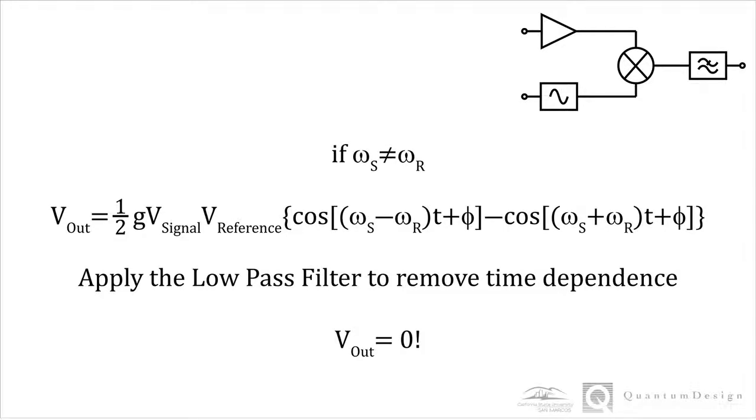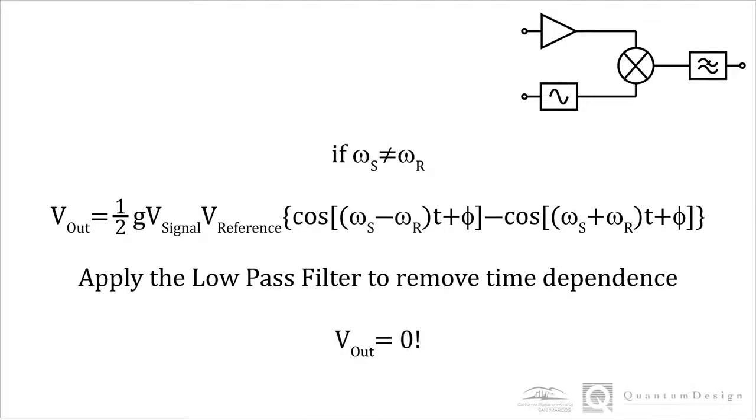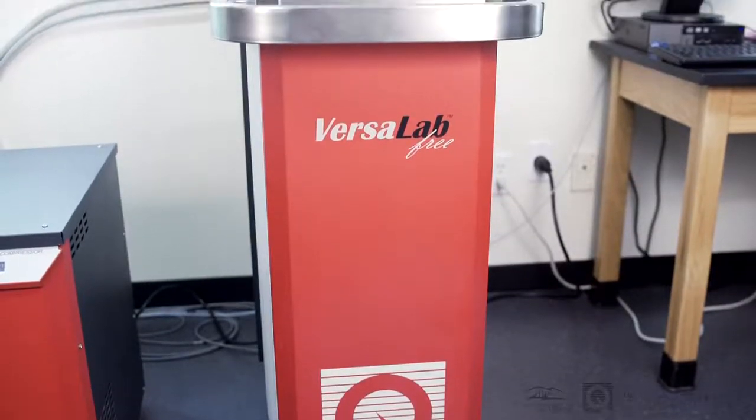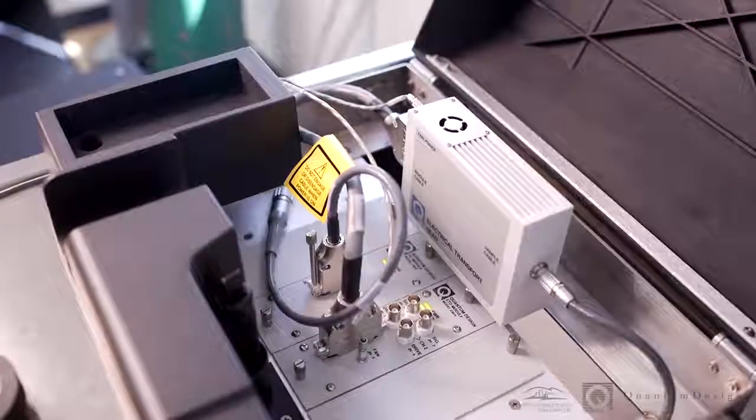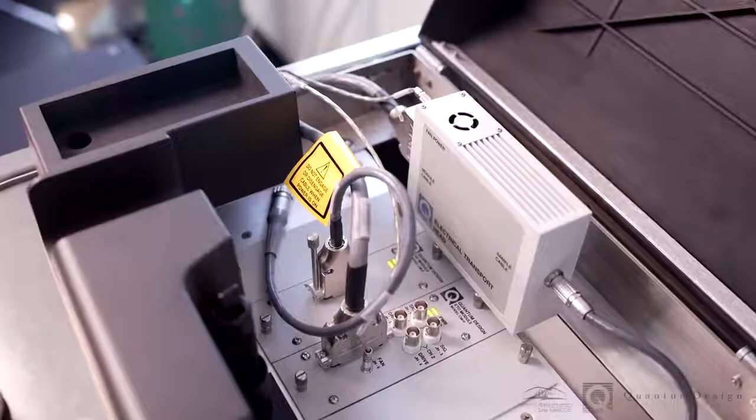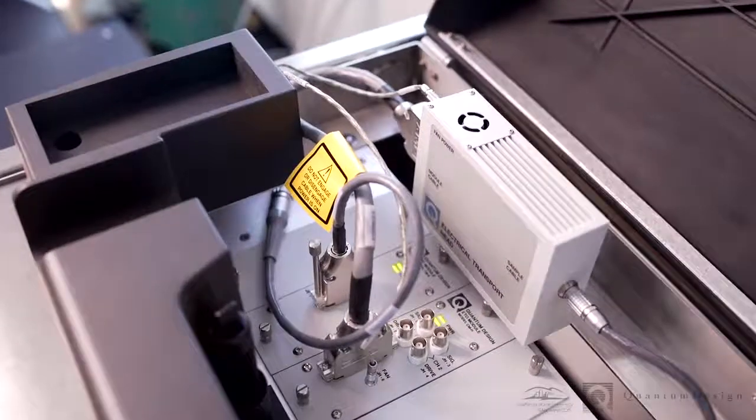We will soon demonstrate this using the electronic transport option, or ETO, module of the VersaLab. Before we perform a measurement with the ETO, we should note that our previous discussion has been about the analog lock-in technique. The VersaLab ETO performs measurements using a digital lock-in technique controlled by the module's digital signal processor, or DSP.